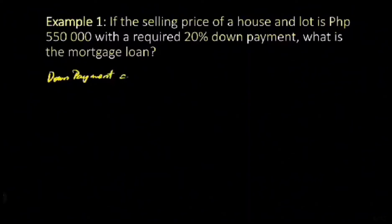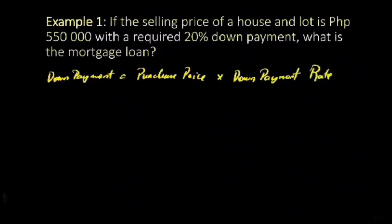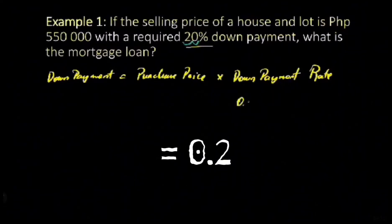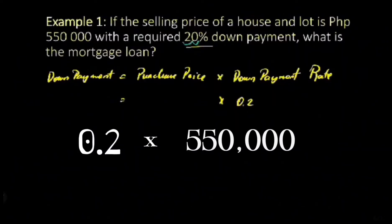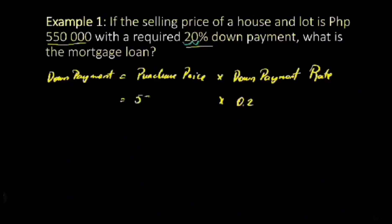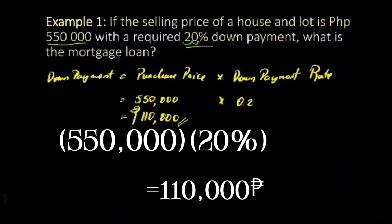To calculate the down payment, the down payment is equal to the purchase price times the down payment rate, which in this case is 20%. We need to convert this to decimal by moving two units to the left, so 20% becomes 0.2. We multiply that by the purchase price of 550,000 pesos. So 20% of 550,000 pesos is equal to 110,000 pesos.